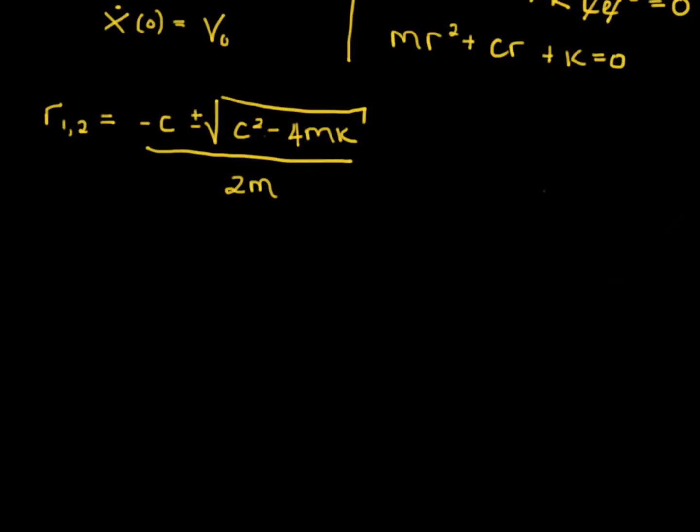Now you might remember from differential equations that we need to consider three different cases based on what this quantity inside the square root looks like. Three possibilities. Either it's greater than zero, or it's equal to zero, or it's less than zero.